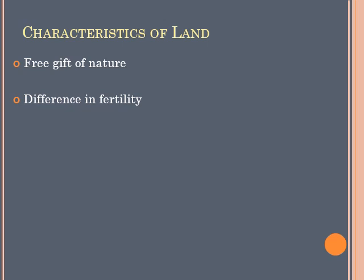The next characteristic is indestructibility of land. Land is a factor of production which is indestructible, meaning it cannot be destroyed. You can convert land into something — a forest, a swimming pool, or an artificial lake — but you cannot fully destroy land.